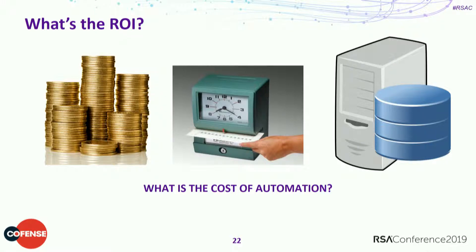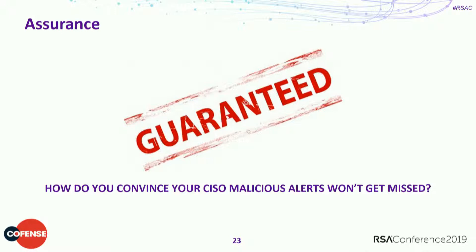As you start to build your automation, how do you determine the ROI? Are you able to save resources and make do with the gaps you have? There's also an infrastructure impact of standing up the automation that you need to account for and justify to your leadership. And there's the need to make sure your CISO knows that you're not over-automating in a way that causes you to miss an alert that might require action.